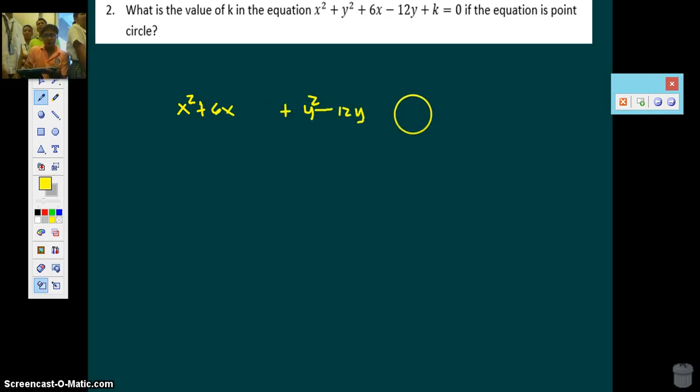Just convert this into its standard form. Minus 12y, so the right side again will be negative k. So adding here, plus 9. This is what? Come on, guys. Help me out. Plus 6x. 36. So basically, we're adding 9 and 36. This is 45.